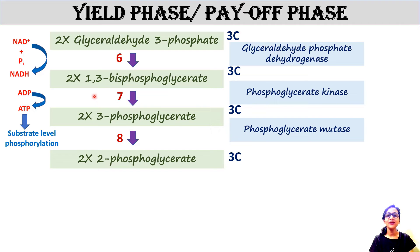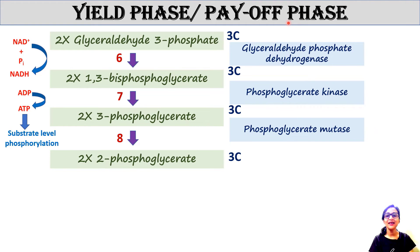Each molecule of 1,3-bisphosphoglycerate is converted into 3-phosphoglycerate by phosphoglycerate kinase, and this reaction generates one molecule of ATP. This kinase transfers the phosphate from 1,3-bisphosphoglycerate to ADP, converting it to ATP, with 3-phosphoglycerate as the byproduct. This is an example of substrate-level phosphorylation, since ATP is synthesized from the substrate without involvement of the electron transport chain.